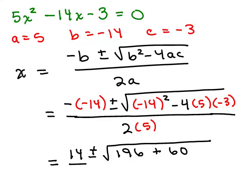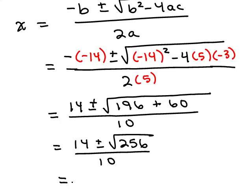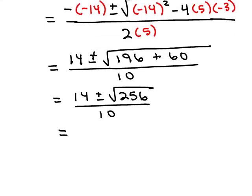In the bottom I have it all over 10. We still have to simplify inside the square root, which will be 256, all over 10.